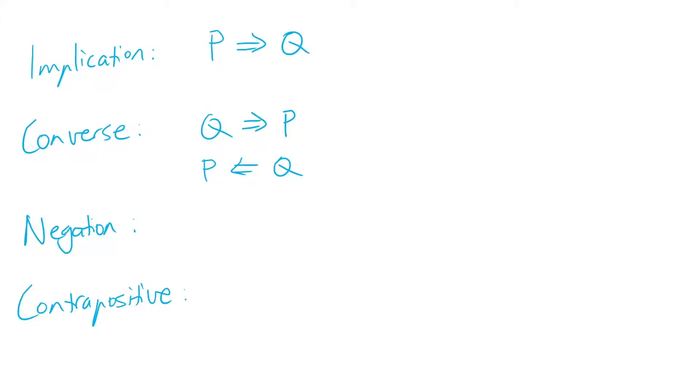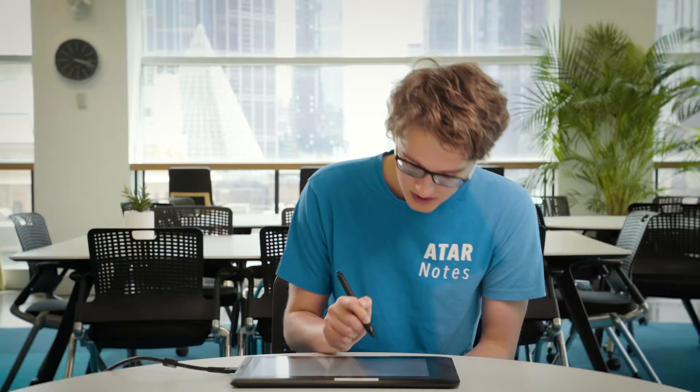The next idea is negation. If you have a statement P, then the negation of that statement will be not P. We can denote that with the symbol ¬P. For example, if our statement P is "it is snowing," then not P — the negation — will be "it is not snowing."